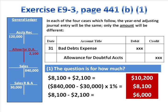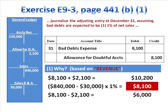The right answer is $8,100. I hope you chose it, and for the right reason. If you didn't choose $8,100, let's talk about why it's correct. We have two possibilities: we could base our estimate on revenue or on receivables. The problem said 1% of net sales. From Monday's lecture, you may remember the decision tree contrasting these approaches.